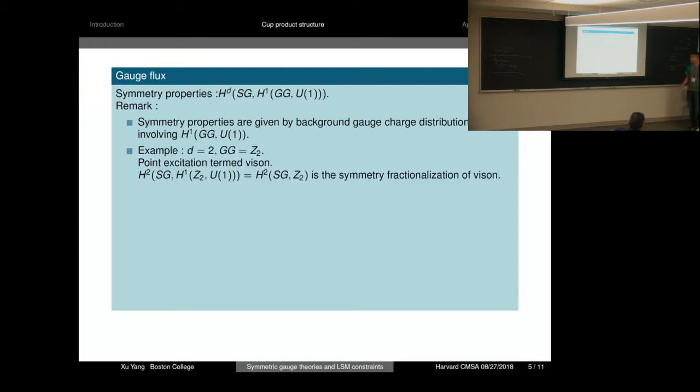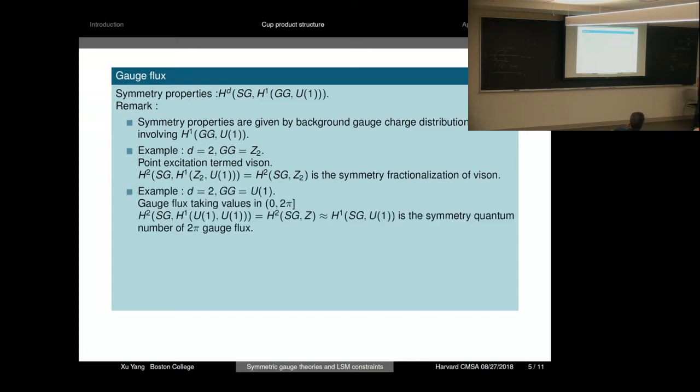The first example is in spatial dimension 2. We choose gauge group to be Z2. Then we have point excitations. The formula simply tells the symmetry fractionalization. Next, if we choose the gauge group to be U(1), but still in two spatial dimensions, then the above formula is isomorphic to the first cohomology group, which labels the symmetry quantum number of the 2π gauge flux.